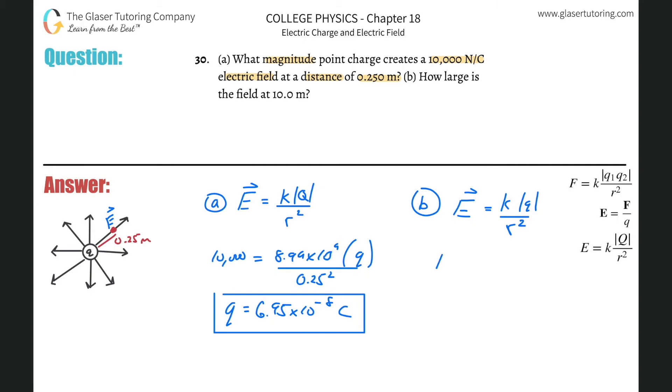So we're trying to find the electric field. That's our unknown. The K is going to be 8.99 times 10 to the ninth. The Q is what we just calculated over here, so that's going to be 6.95 times 10 to the negative eighth. And then that's all divided by the distance squared, so it's going to be 10 meters squared.